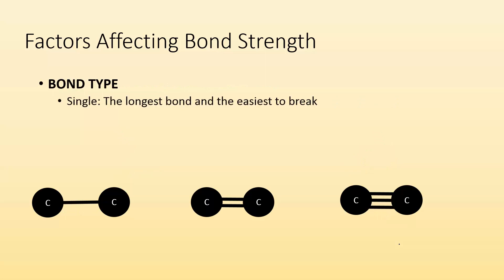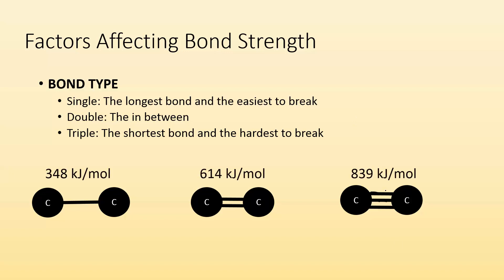Next is the bond type. Are we talking about a single, double or triple bond? Well, single bonds are the longest bond and they're the easiest to break. They have the least shared common electrons. So it's going to be easier to break them apart. Double bonds are going to be the in-between bond and the triple bond is going to be the shortest bond. And it's going to be the hardest one to break. They're sharing six electrons. And if we take a look experimentally, we see this. Single bonds have bond enthalpy between carbon at 348 kilojoules per mole. Double more than that is 614 kilojoules per mole. And for triple bonds, it's the most. It's 839 kilojoules per mole.